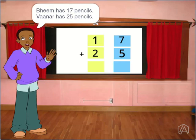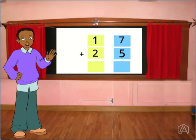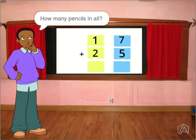Babe has 17 pencils. Vana has 25 pencils. How many pencils in all?